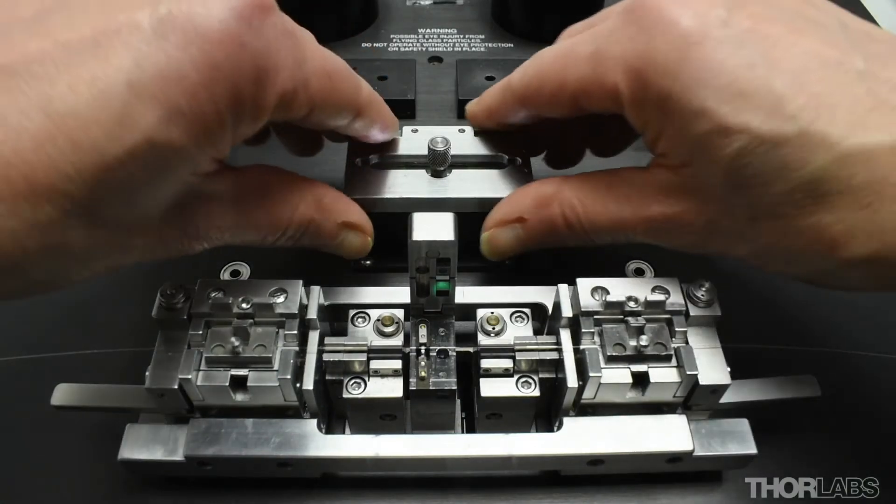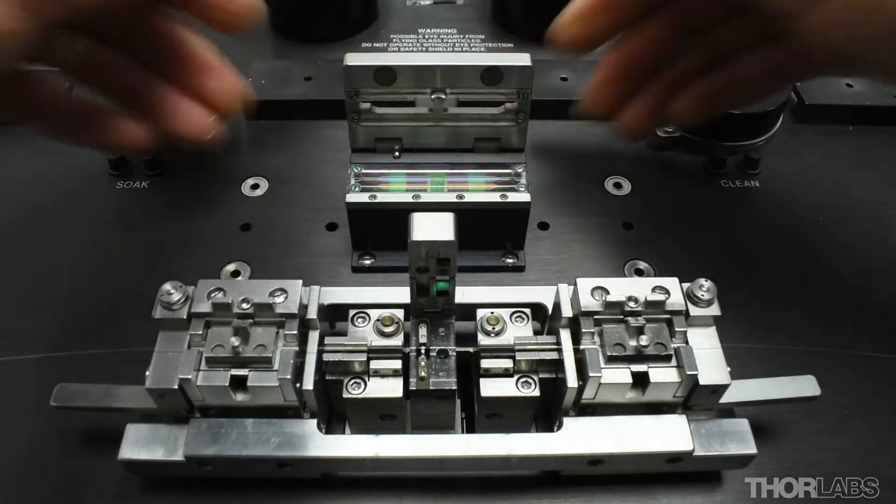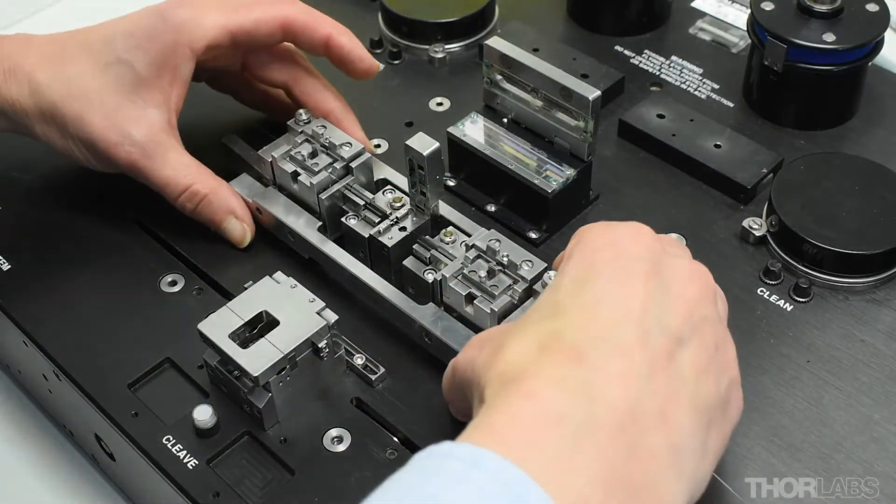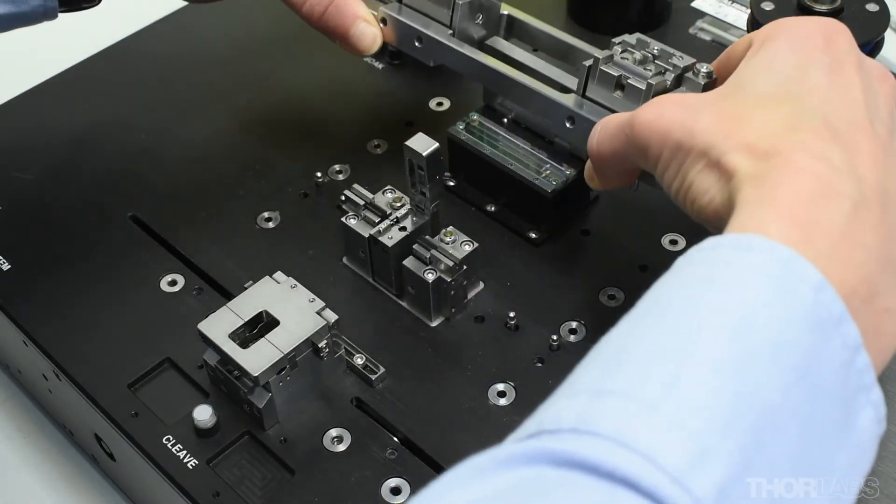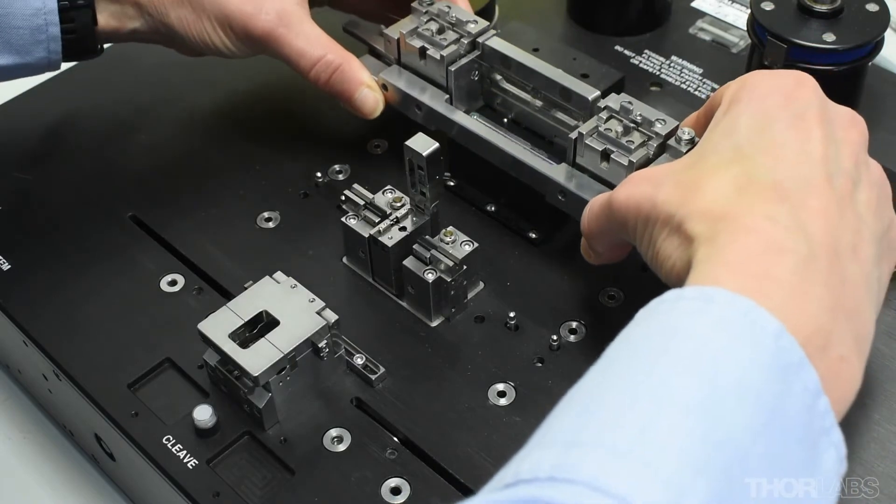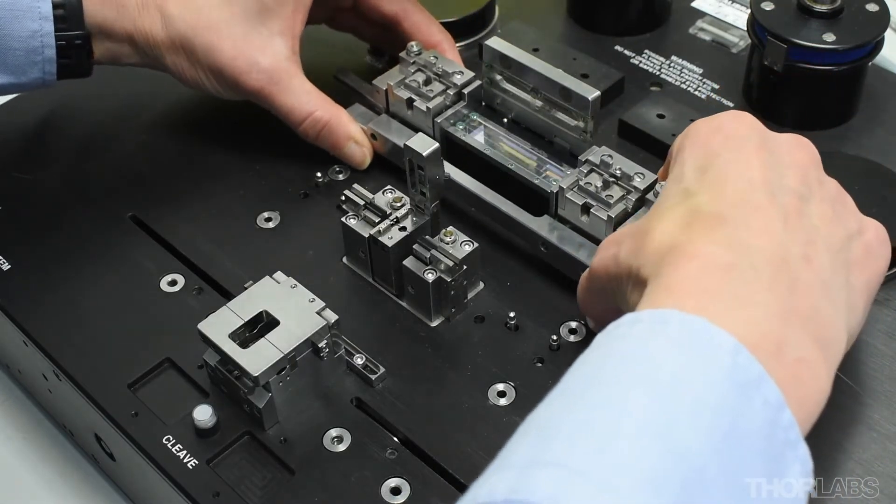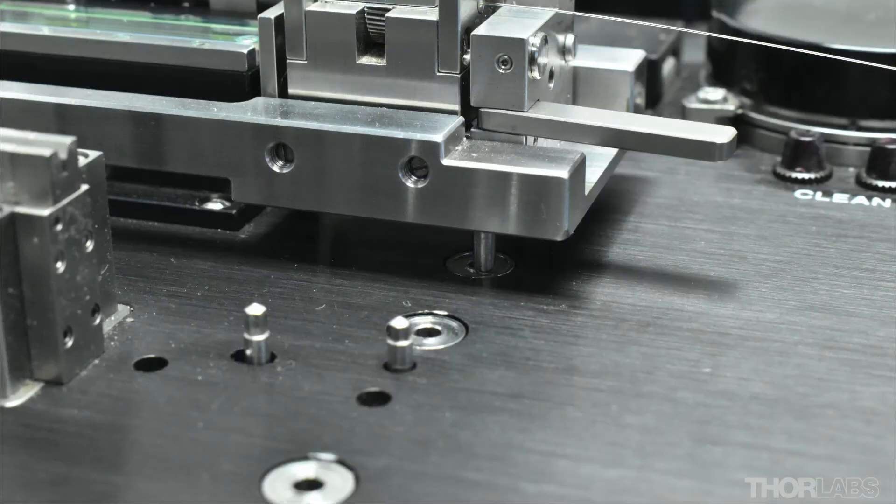To perform a recoat, first open the lid of the recoat mold. Now move the tensioned splice from the splice station to the recoat station using the transfer jig. Do this carefully so that the splice cap or recoat mold lid are not knocked and slammed shut.